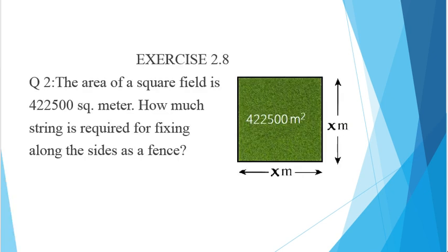The question is from exercise 2.8. I am going to read the question. Area of a square field is 422,500 square meter. How much string is required for fixing along the side as a fence?